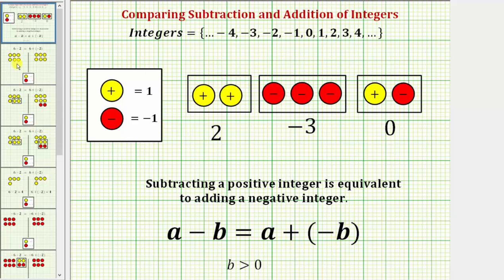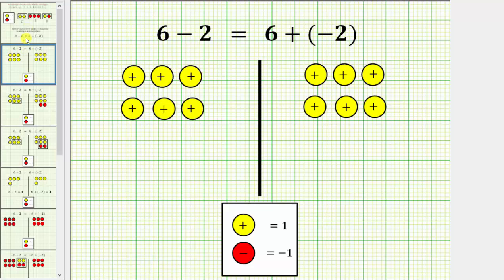Let's look at our first example. We'll use integer chips to show that six minus positive two is equivalent to six plus negative two. In both cases, we begin with six positive chips to represent positive six. For six minus positive two, we want to remove or take away two positive chips, and for six plus negative two, we want to add two negative chips.